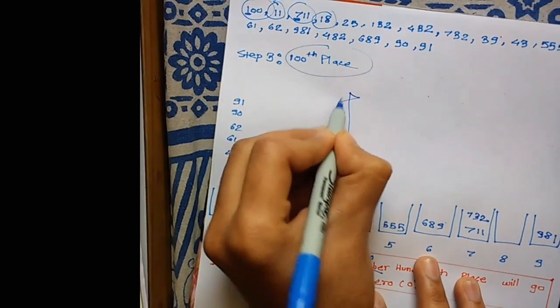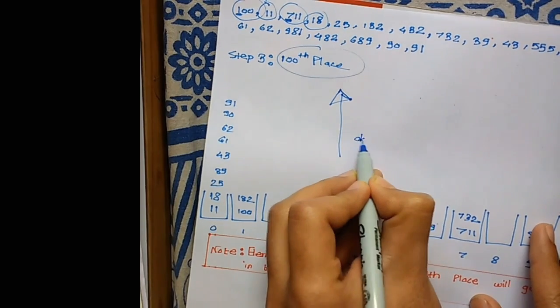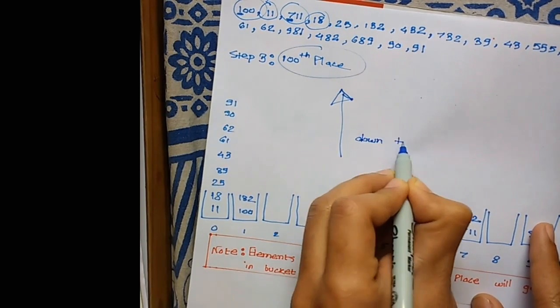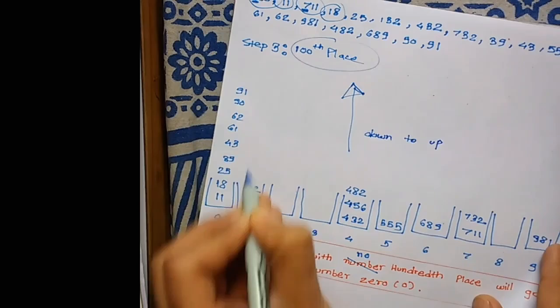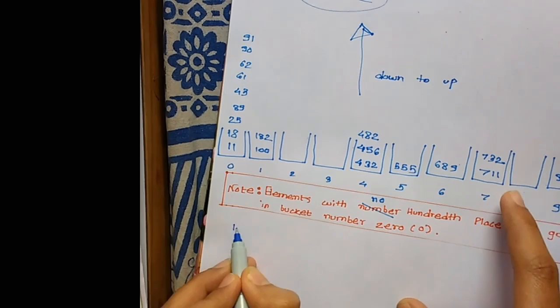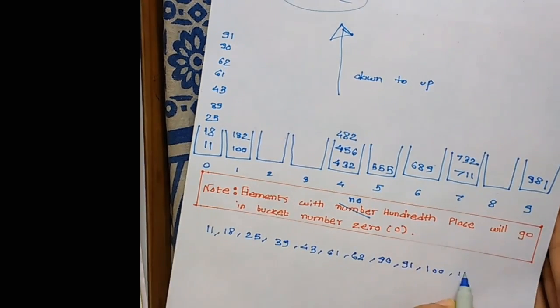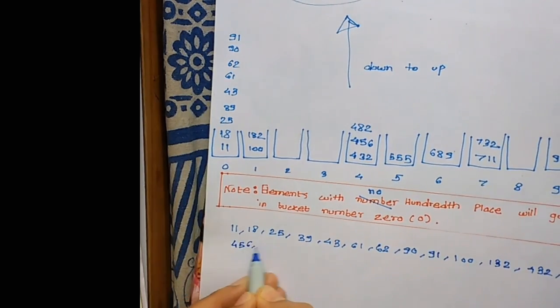This is our final result. Similarly, we go from down to up while sorting them in list format. This is the final step, so observe carefully: 11, 18, 25, and so on. Now you'll observe that each element is sorted.